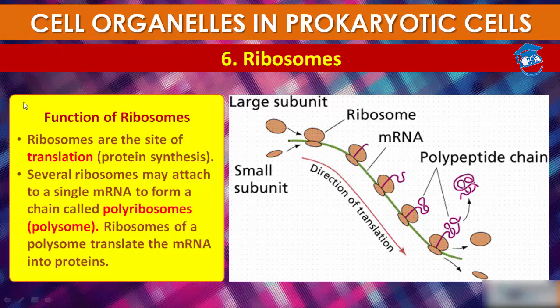Several ribosomes may attach to a single mRNA to form a chain called a polyribosome, also called a polysome. Ribosomes of a polysome translate the mRNA into proteins. After translation, the two subunits dissociate from the mRNA.